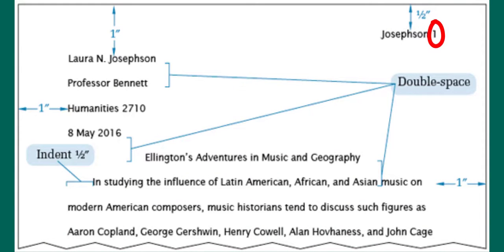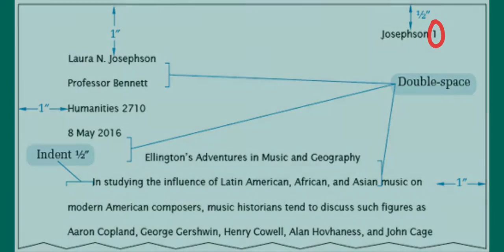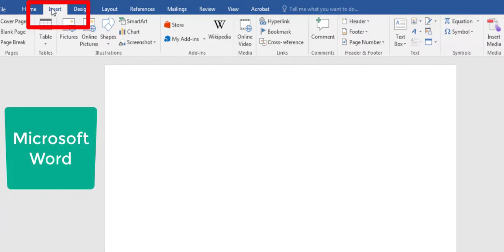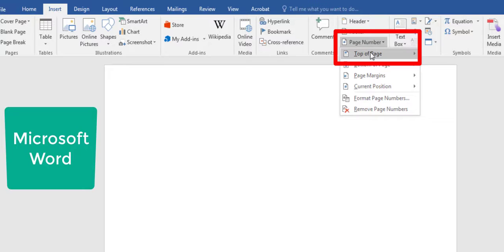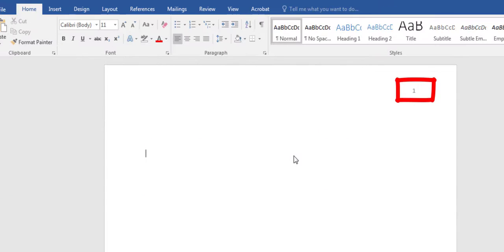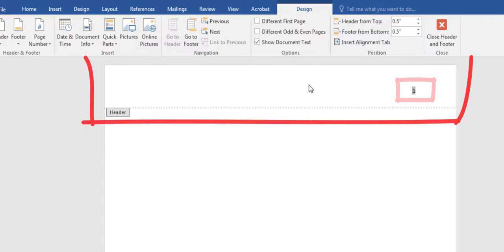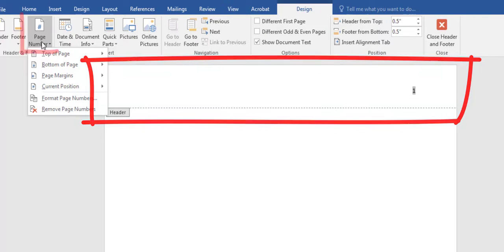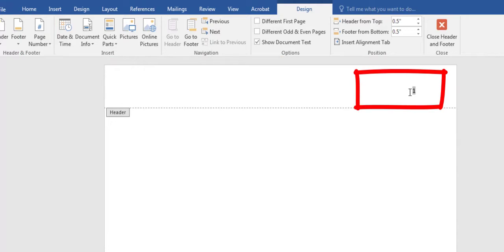Insert a page number in the top right corner of your header. In Microsoft Word, go to Insert, Page Number, Top of Page, and select option 3 which shows the number on the right. You could also double click the top of the page which has an option for inserting a page number. Next, add your last name before the page number. This header will be applied to all pages in your paper.